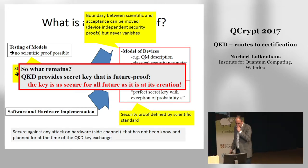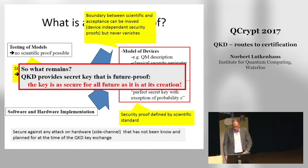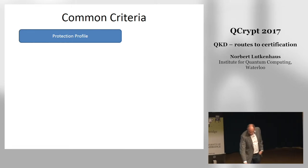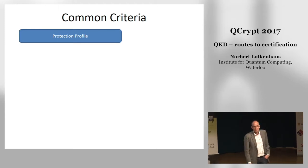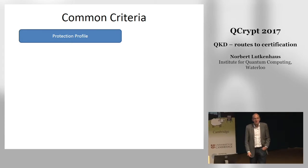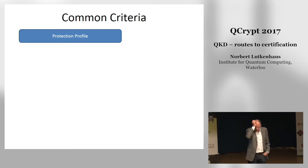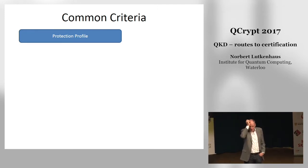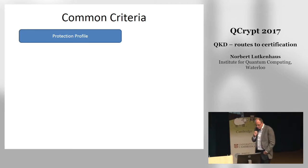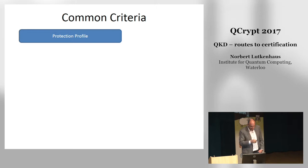The process we are thinking about in ETSI is to go along the lines of something called Common Criteria. I first heard about Common Criteria many years ago working in the CQC project in Europe, when Thomas Langer told us about it. As a physicist at the time, I didn't quite understand it, because Common Criteria certification basically says the device is doing whatever the person building and certifying it claims it is doing — which is a somewhat convoluted concept.